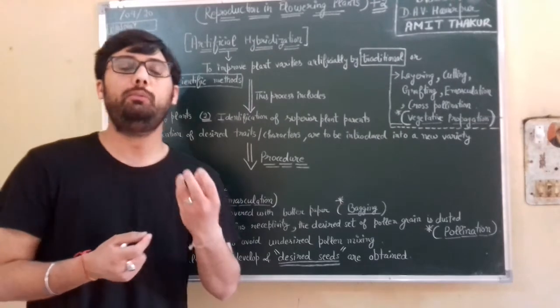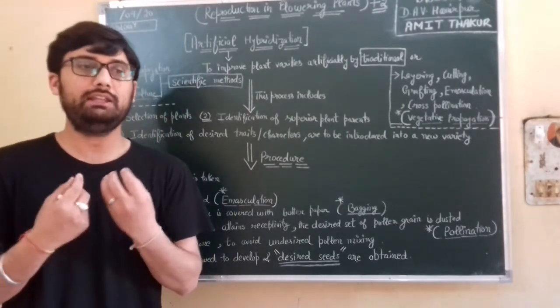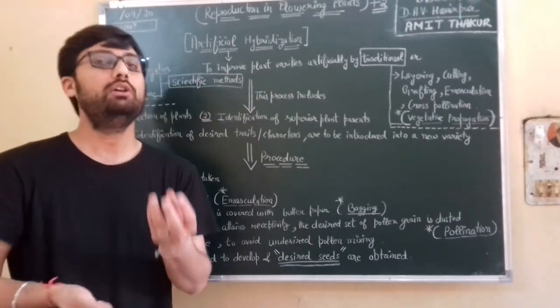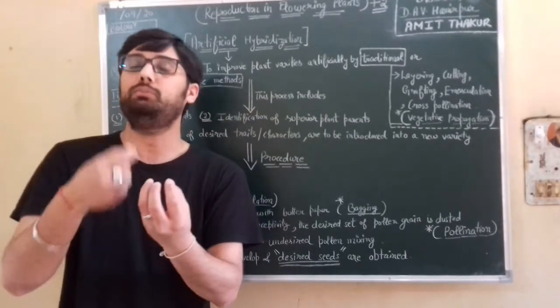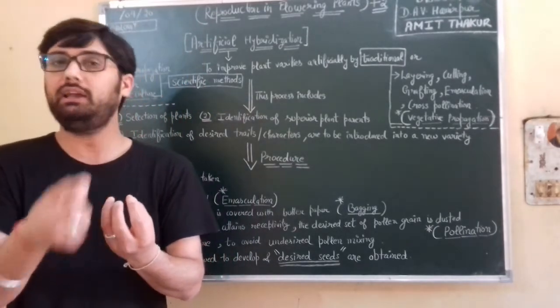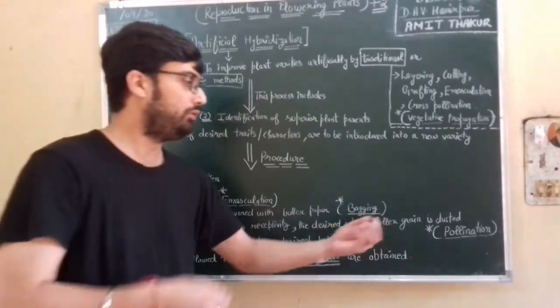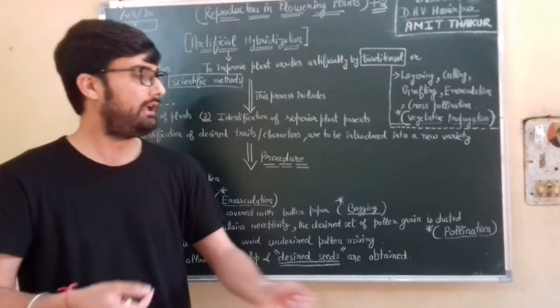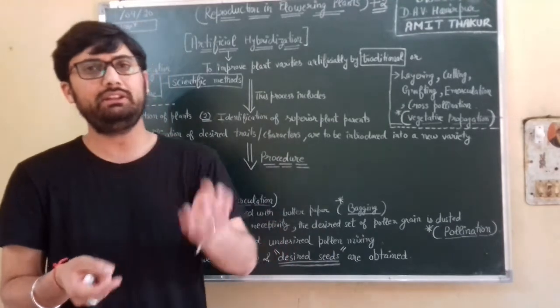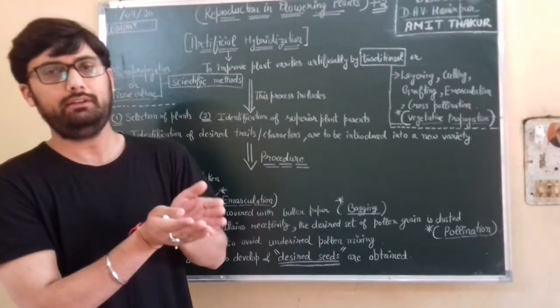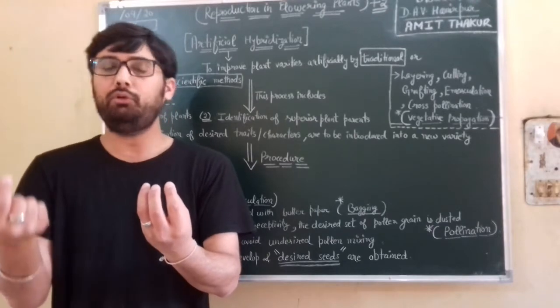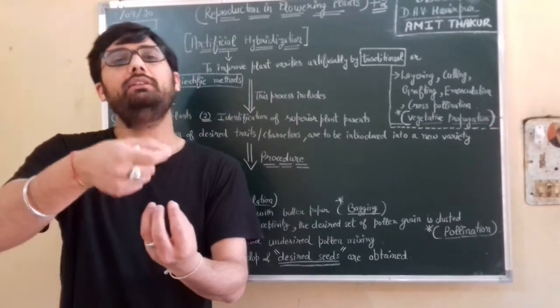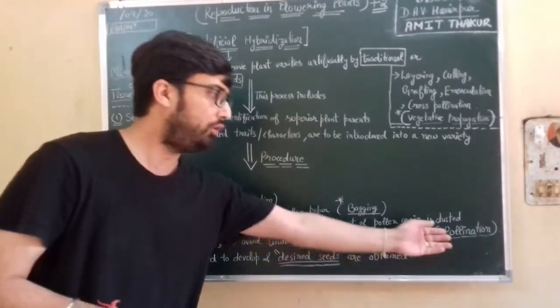So what do we have to do? Which we want to pollinate, that desired set of pollen grains we will dust on the stigma part, which is ready for receptivity. Then we will dust in it. What do we say? Pollination. Artificial pollination because we are going to dust on the stigma part. So that is pollination.